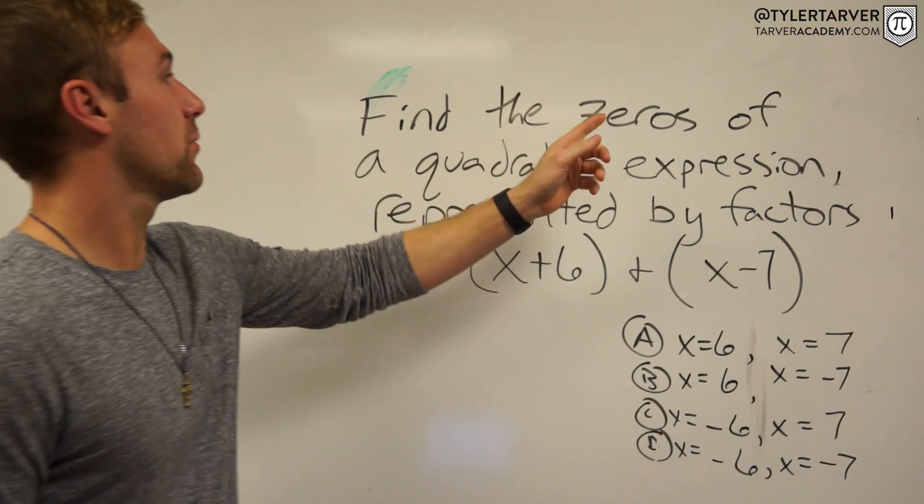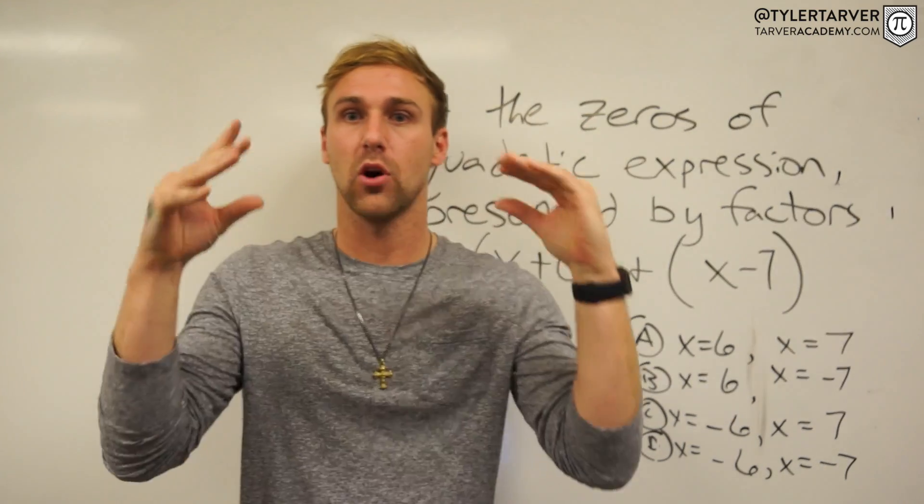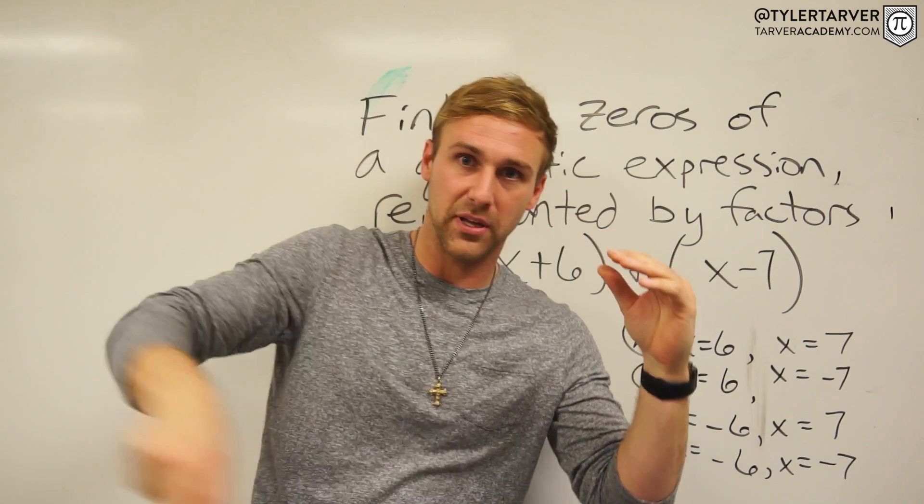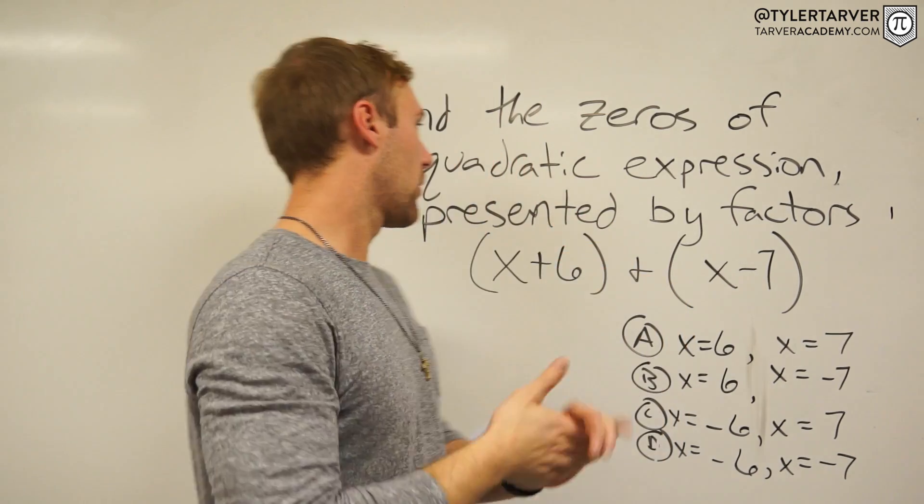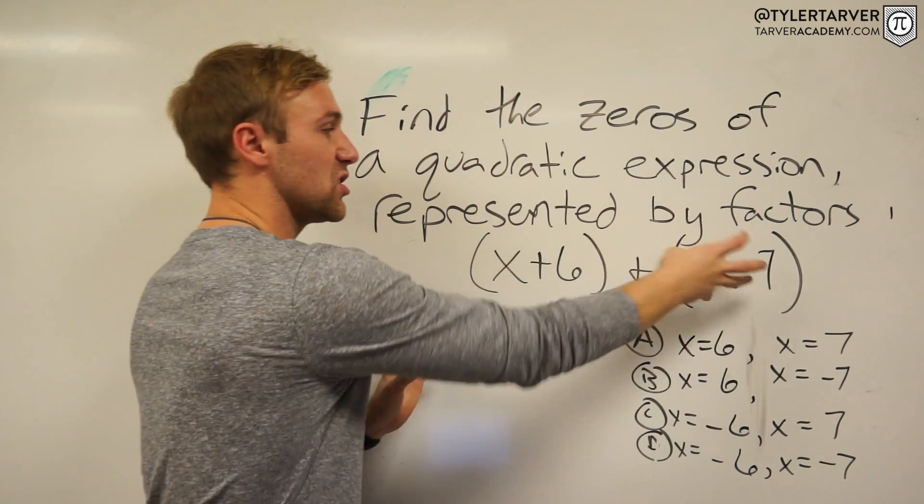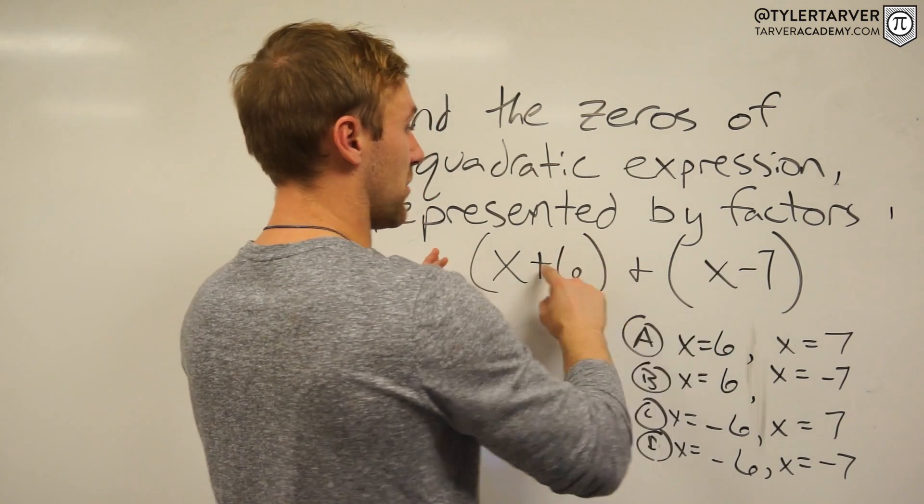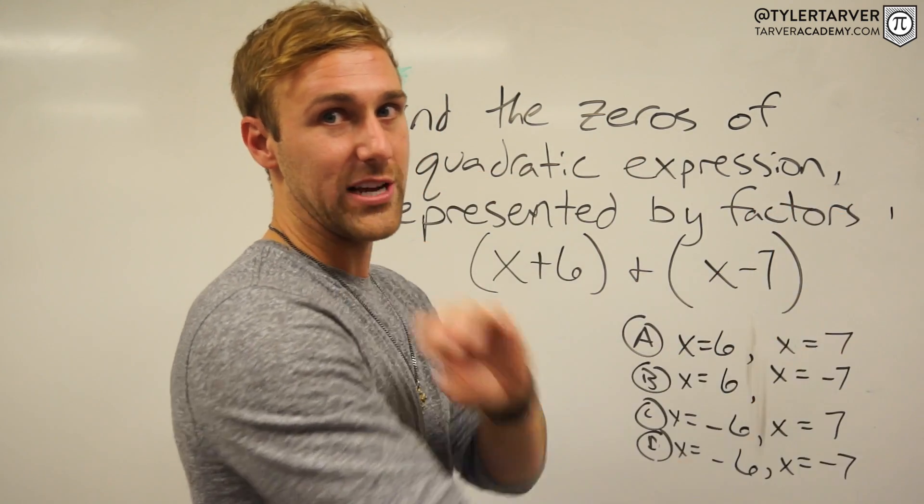So let's read it again. Find the zeros of a quadratic expression. Quadratic expression just means like if we put the whole problem together, it would have an x squared, which means it's going to be like a loop. Represented by factors x plus 6 and x minus 7. That means these two are in our expression. So if we wanted to find it, we could just multiply those two together and we would have our equation.